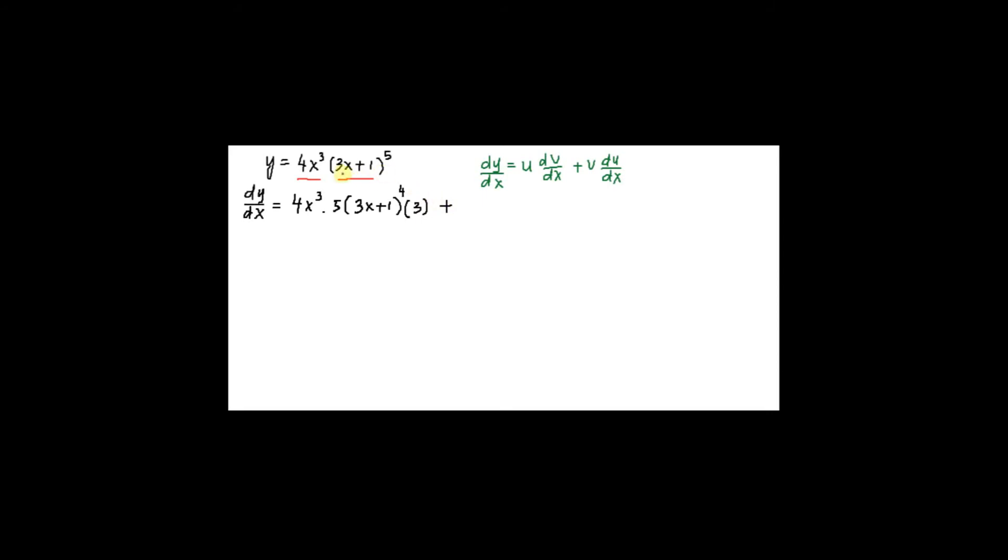Plus, now I copy down the second function, that is my 3x plus 1 power 5, multiply with the differentiate of the first function, which is 12x squared.